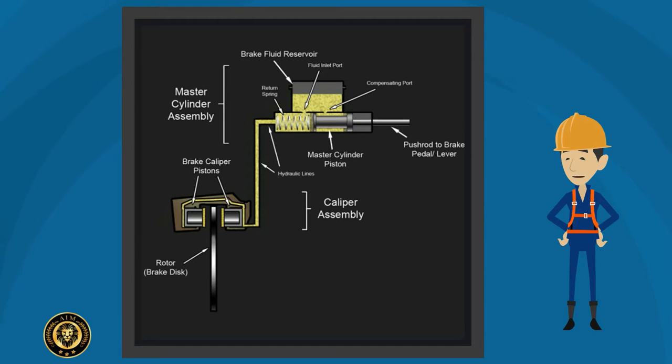Braking begins at the brake pedal. When the pedal is pushed down, brake fluid is forced from the master cylinder into the lines to the wheel brakes. As hydraulic pressure increases, brake shoes or pads are forced against the rotating drums or disc. The resulting friction slows or stops the wheels and the vehicle.